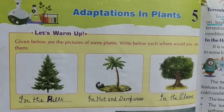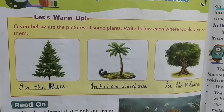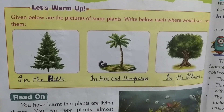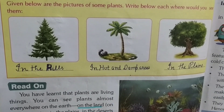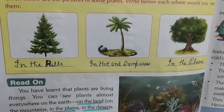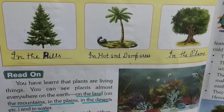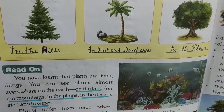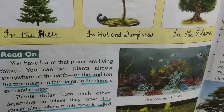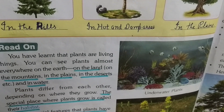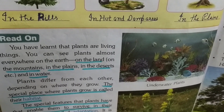See the pictures and write below where would you see them. Number 1: In the hills. Number 2: In hot and damp areas. Number 3: In the plains. See the plants — on the land, on the mountains, in the plains, in the deserts, and in water.